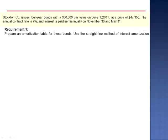Exercise 13. Stockton Company issues four-year bonds with a $50,000 par value on June 1st, 2011 at a price of $47,350. The annual contract rate is 7% and interest is paid semi-annually on November 30 and May 31.